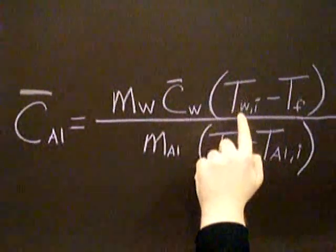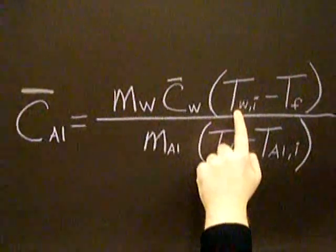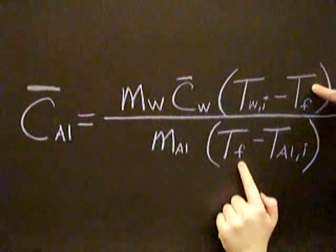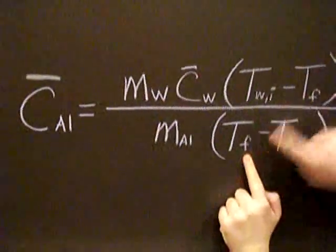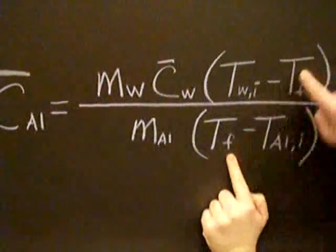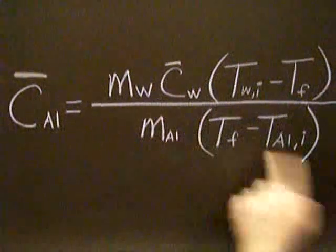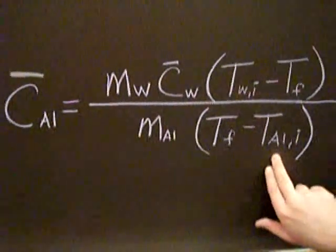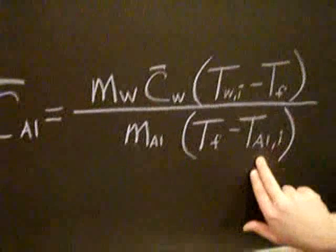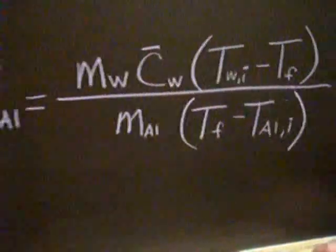The initial temperature of the water, we'll measure that. And then we have the final temperature for both of these, because in thermodynamic equilibrium, we'll measure that. Mass of the aluminum, we'll measure that. And then the initial temperature of the aluminum, well, that will be given to us as minus 195.8.